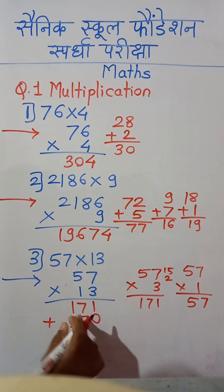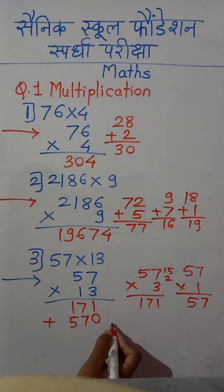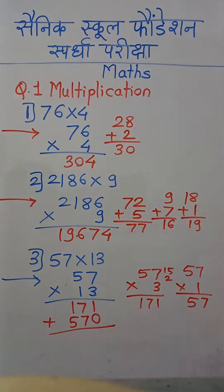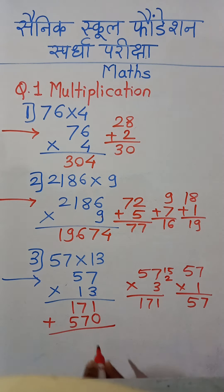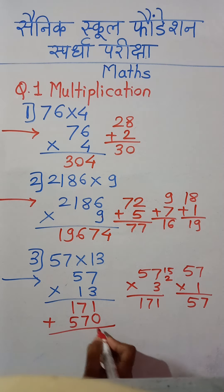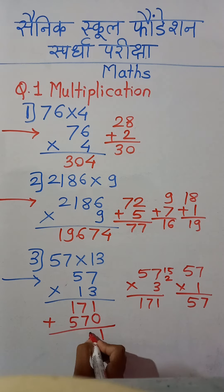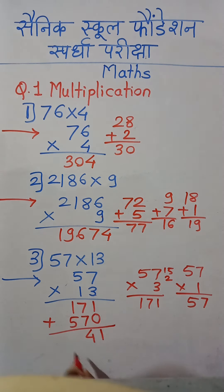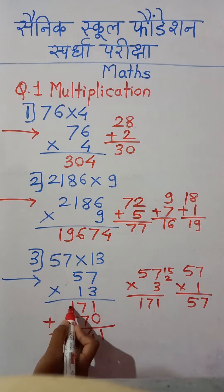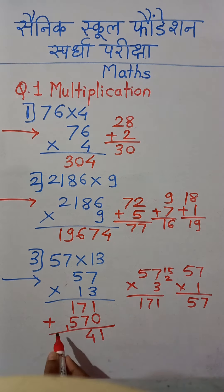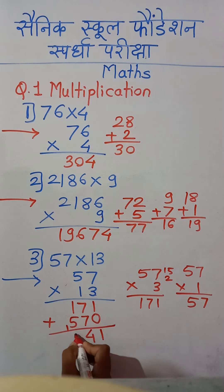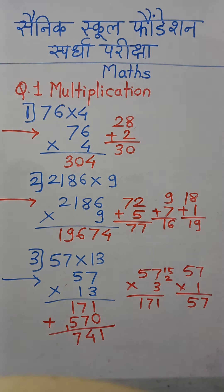So we write 570 — placing 0 at units place, then 7 and 5. Now we add both answers. Starting from the right: 1 plus 0 is 1; 7 plus 7 is 14, write 4 carry 1; 1 plus 5 plus carry 1 is 7. So our final answer is 741.